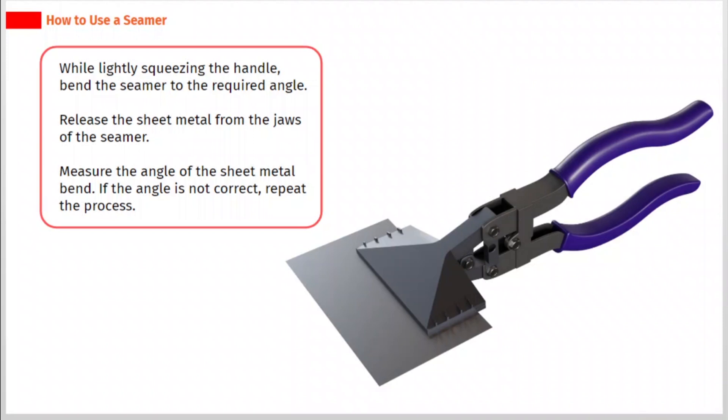While lightly squeezing the handle, bend the seamer to the required angle. Release the sheet metal from the jaws of the seamer. Measure the angle of the sheet metal bend. If the angle is not correct, repeat the process.